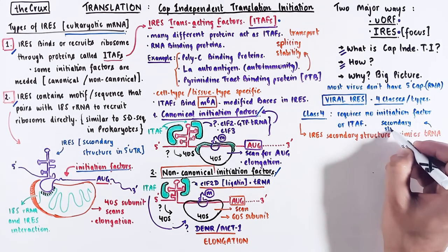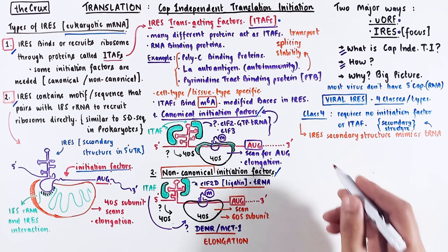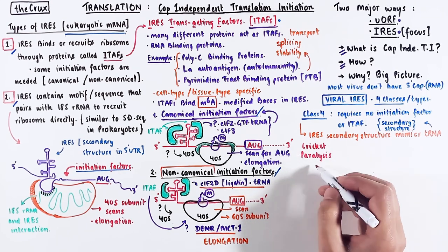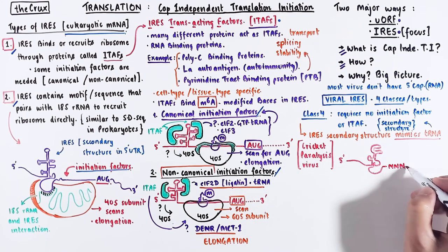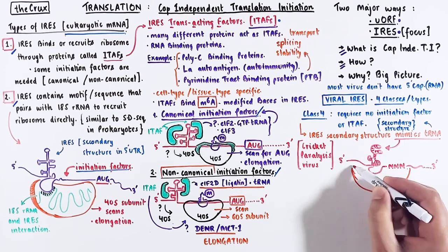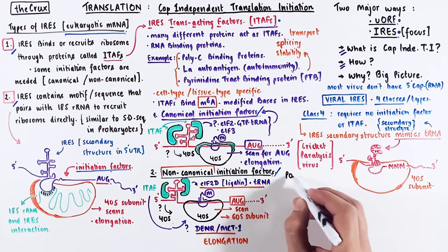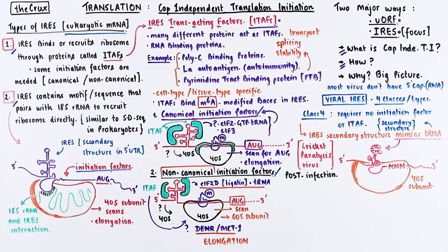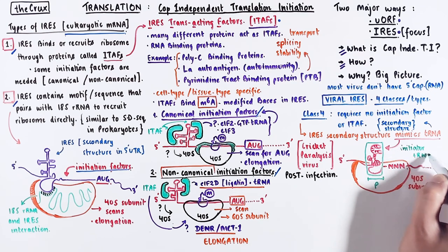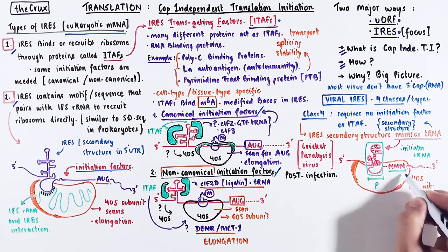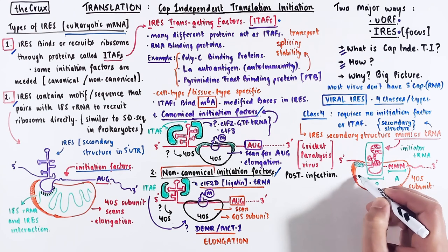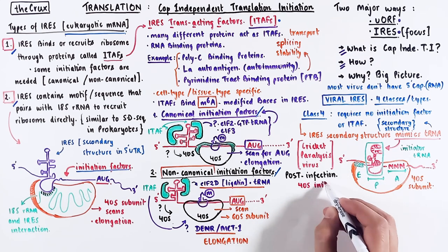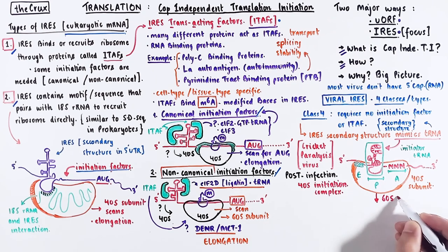Note that tRNA itself is a secondary structure with many stem loops and hairpins. Taking the example of cricket paralysis virus mRNA, the 5' UTR mimics the tRNA structure and can recruit the ribosome directly — all this happens when the virus has infected a cell. This secondary structure positions itself at the P site of the 40S subunit and mimics the structure of an initiator tRNA. The bases immediately after the P site become the codon at the A site, and the preceding bases specify the E site, which is empty. This is the 40S initiation complex ready for the 60S subunit to bind.